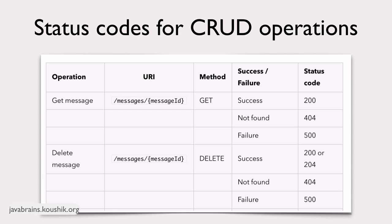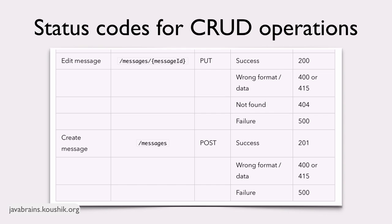Edit message. You get a PUT for the message instance resource ID. You return 200 OK or success if everything goes well. You return 400 or 415 if the body of the request you've got is not in the right format or doesn't have the right data. You return 404 again if you're not able to find the message that you want to update. And again, you return 500 if there is an error.